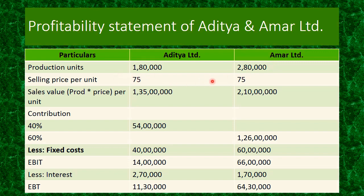Selling price is 75 rupees each. Sales value is units multiplied by price — 1 lakh 80,000 multiplied by 75 is 1 crore 35 lakhs, and 2 lakh 80,000 multiplied by 75 is 2 crore 10 lakhs. Coming to contribution: 40% and 60% is the contribution ratio, so 40% of sales gives 54 lakhs, and 60% of 2 crore 10 lakhs gives 1 crore 26 lakhs.